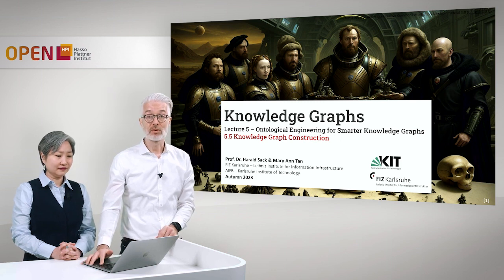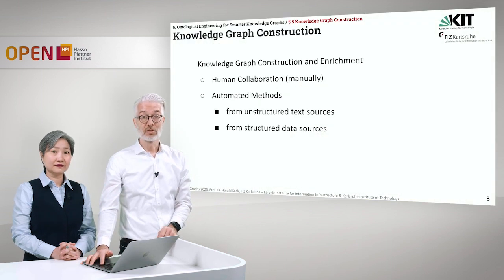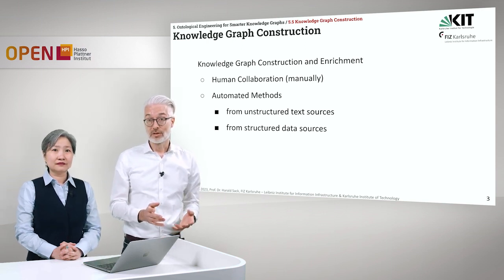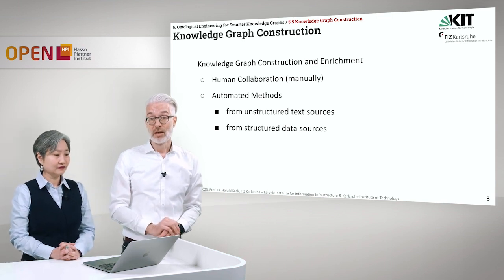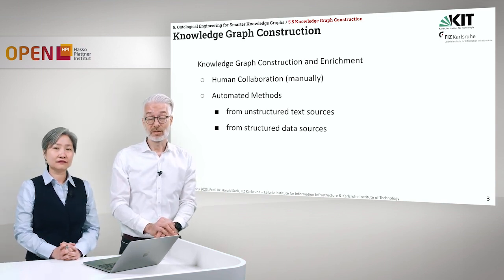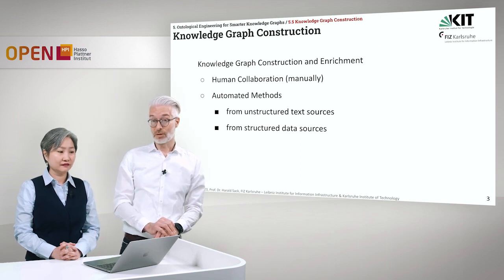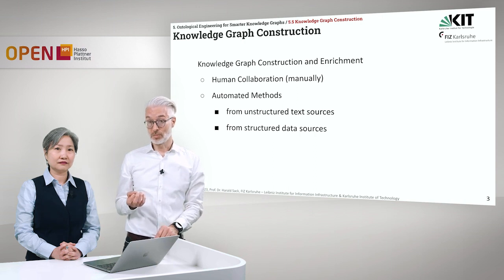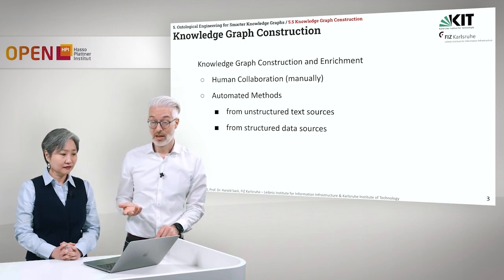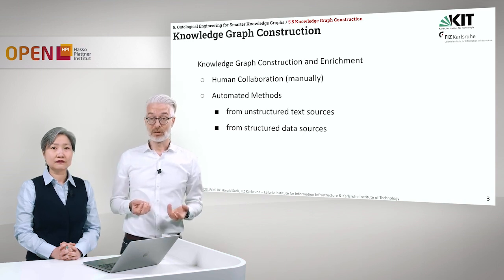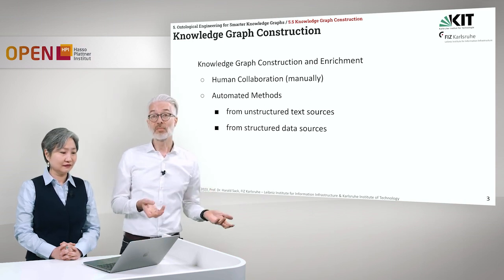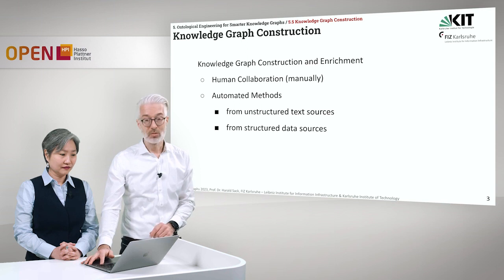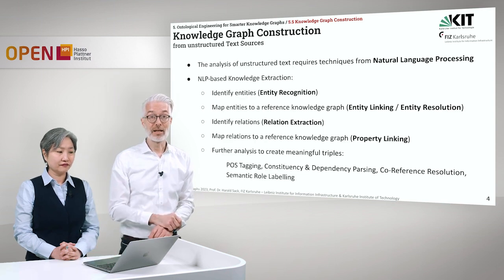In this section of the lecture, we are going to talk about knowledge graph construction. How can knowledge graph construction be achieved? Of course, you can do this manually, for example, with human collaboration. However, there are also automated methods, because many times what we are going to use is either unstructured text sources, or we are looking at structured data resources — for example, database tables that we can transform to a knowledge graph. And this is what we are going to tackle in this lecture.